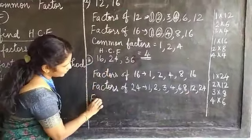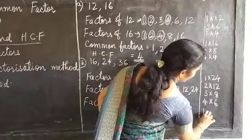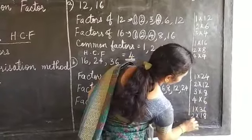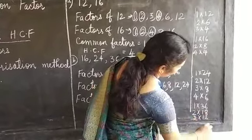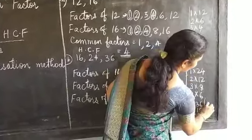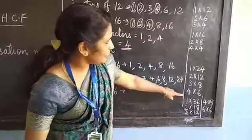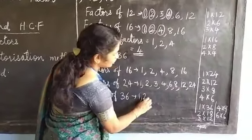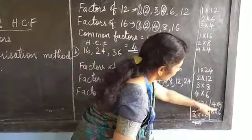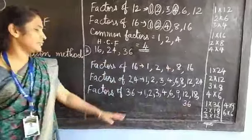Next, we are going to find the factors of 36. 1 × 36 = 36, 2 × 18 = 36, 3 × 12 = 36, 4 × 9 = 36, 6 × 6 = 36. So the factors of 36 are 1, 2, 3, 4, 6, 9, 12, 18 and 36. These are the factors of 36.